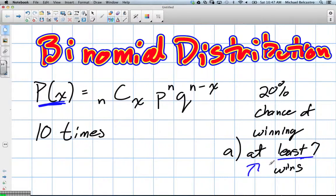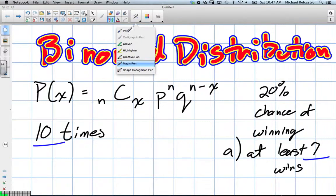So this is actually very important because at least 7 wins gives us many different options. This formula will help us calculate for one specific one. So for instance, if we're trying to figure out what's our probability of winning 7 out of 10 times, we'll do that as the very first one.